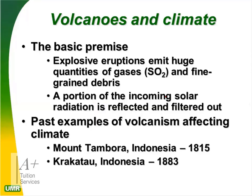Volcanoes and climate: explosive eruptions emit huge quantities of gas — sulfur dioxide (SO₂) and fine-grained debris. A portion of incoming solar radiation is reflected and filtered out. Past examples of volcanism affecting climate include Mount Tambora and Krakatoa in Indonesia. These volcanoes emitted so much gas into the air that they changed the local climate. For example, a volcano erupting near an ice cap like Greenland can lock heat into the earth and melt ice — this relates to the greenhouse effect.